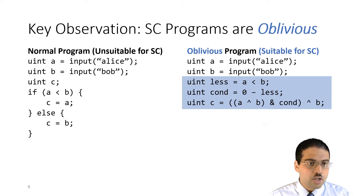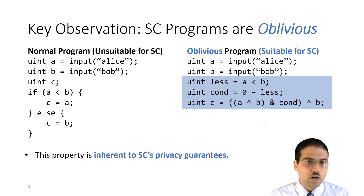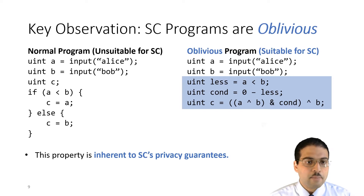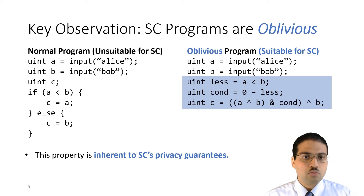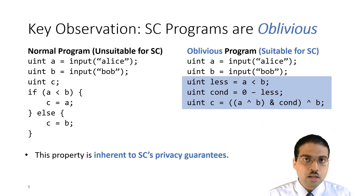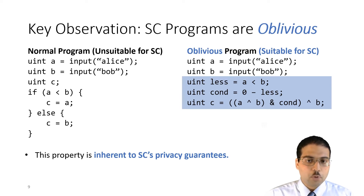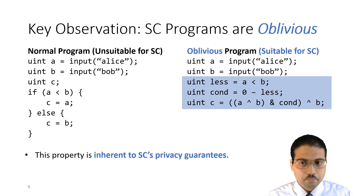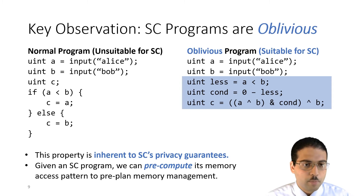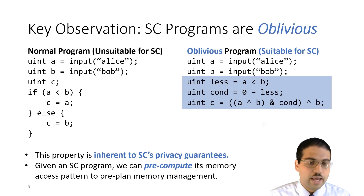This requirement that the program is oblivious is inherent in the privacy guarantees that secure computation tries to provide. If you had a secure computation protocol that worked with non-oblivious programs, the party running it would be able to observe what memory accesses they're making and infer something about the input to the program based on that. Our key insight in MAGE is that we can leverage the obliviousness of secure computation programs to pre-compute their memory access patterns and tailor our memory management to those access patterns.